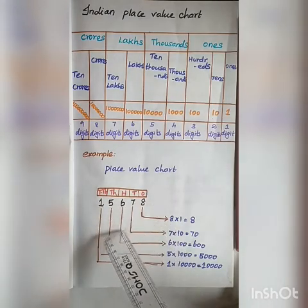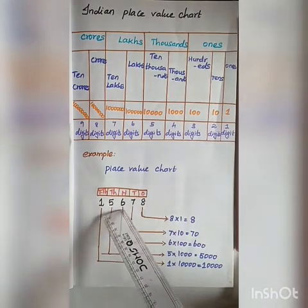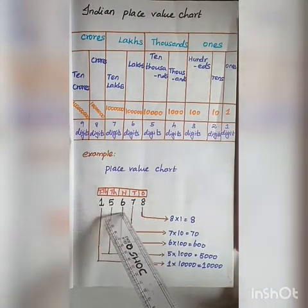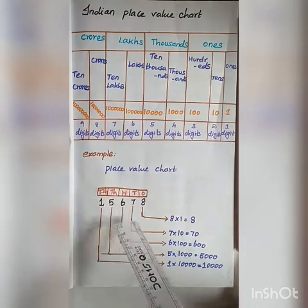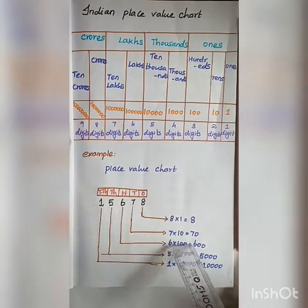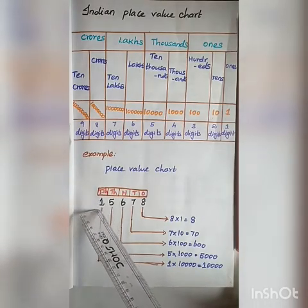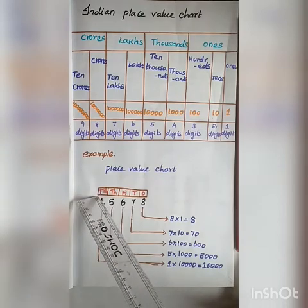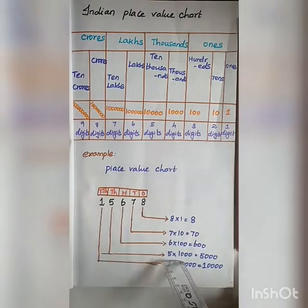For example, if a problem asks: what is the place value of 6 in the given number? Find 6 in the 100's place, so the place value of 6 is 600. Another example: what is the place value of 1 in the given number? 1 is in the 10,000's place, so the place value of 1 is 10,000.